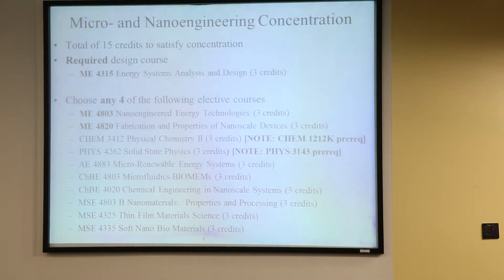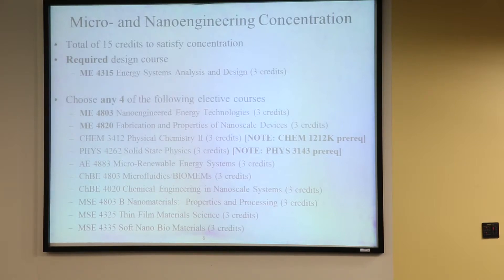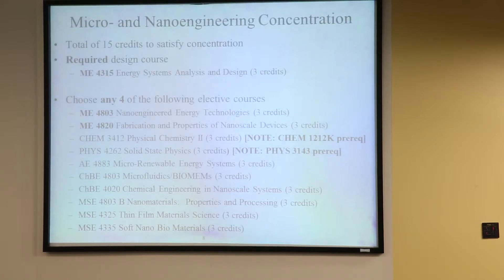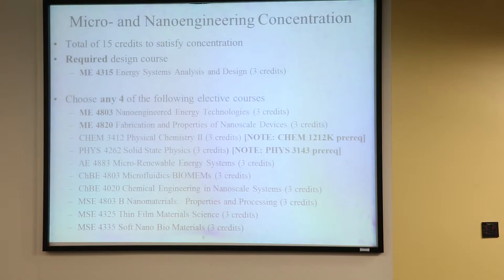From the coursework standpoint, to satisfy the concentration there are 15 credits: a required design course in energy systems analysis, plus four elective courses. These include nanoengineered energy technologies and fabrication of properties at nanoscale devices—fabrication means you're actually learning how to make nanoscale objects and devices. There are also courses in chemistry and physics, learning more deeply how atoms and molecules behave and interact with each other, which plays a huge role in how small things behave. And there's micro-renewable energy systems, covering how small things can play a role in energy.